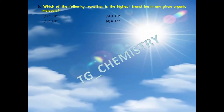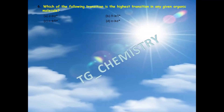Fifth question: which of the following transitions has the highest energy in any given organic molecule? Options are: A) sigma to sigma*, B) pi to pi*, C) non-bonding to pi*, D) non-bonding to sigma*. The lowest energy level is the sigma bond level, and the highest is sigma*, so the correct answer is option A — sigma to sigma*.